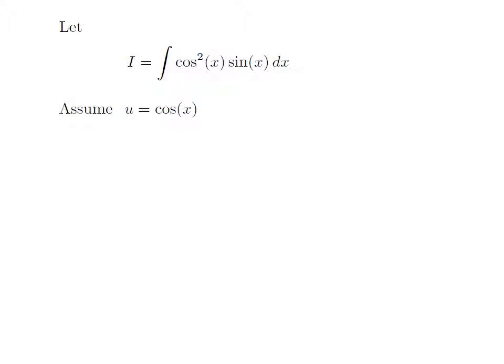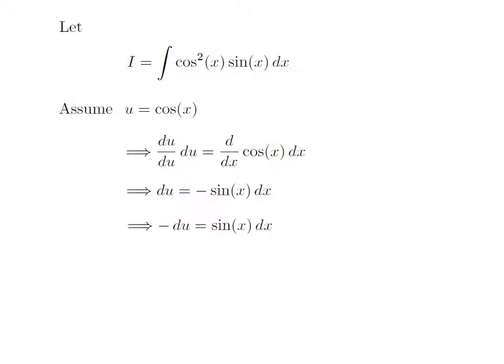I have assumed u is equal to cosine of x. Taking the differential of both sides, we get: differentiation of u with respect to u is equal to 1, and differentiation of cosine of x with respect to x is equal to minus sine of x. So, we are left with differential of u is equal to minus sine of x into differential of x. Taking minus to the left, we get minus of differential of u is equal to sine of x into differential of x.